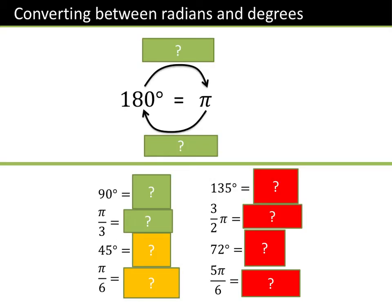We know that 180 degrees is π. So if you know that 180 is π, how do we convert and find the rest? From degrees to radians, you divide by 180 and multiply by π — equivalently, multiply by π over 180.